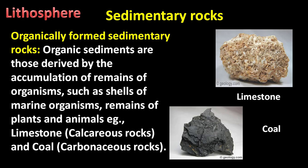Organically formed sedimentary rocks are derived from the accumulation of remains of organisms such as shells of marine organisms and remains of plants and animals. Examples include limestone, which is called calcareous rock, and coal, which is called carbonaceous rock.